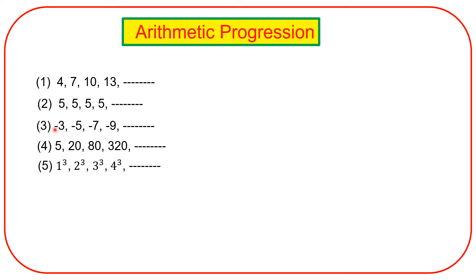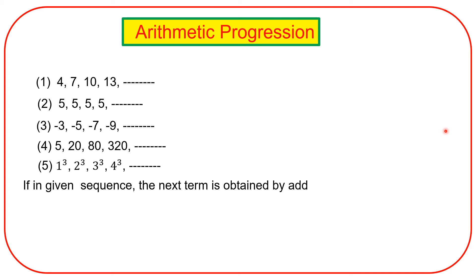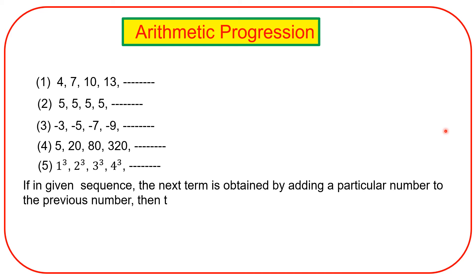These sequences are called arithmetic progressions. Definition: if in a given sequence the next term is obtained by adding a particular fixed number to the previous term, then the sequence is called an arithmetic progression.